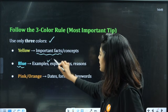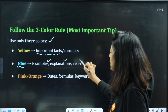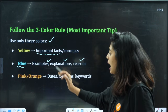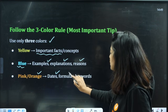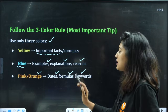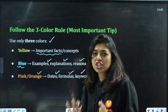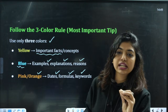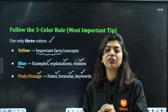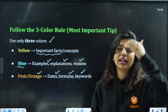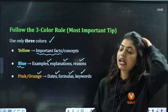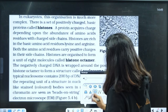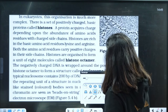Blue colour is for examples, explanations and reasons. Pink or orange is for dates, formulas and keywords. Wherever yellow is there, you will understand that it is an important fact or concept — like for example the RAS mechanism. Try to use these colours consistently.